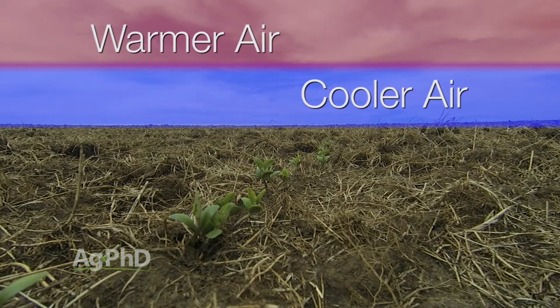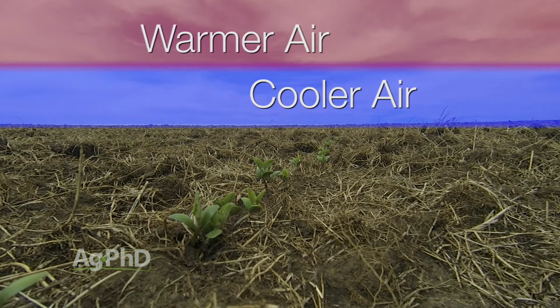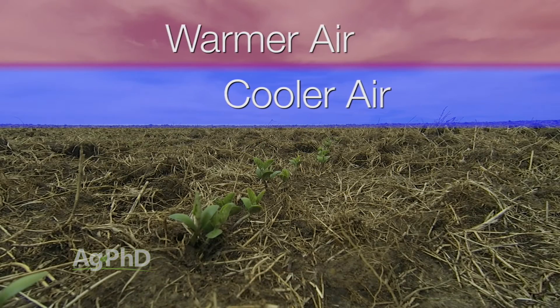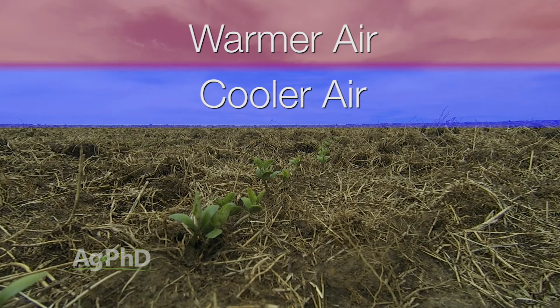This weather condition — a temperature inversion — is where we've got warm air and cold air not in the right order. Instead of getting colder going up, there's actually a warm layer trapping a cold layer of air down. That's where we can run into some issues with spraying. If you're out trying to catch our weed of the week, you may have to keep your eyes out for these types of inversions.